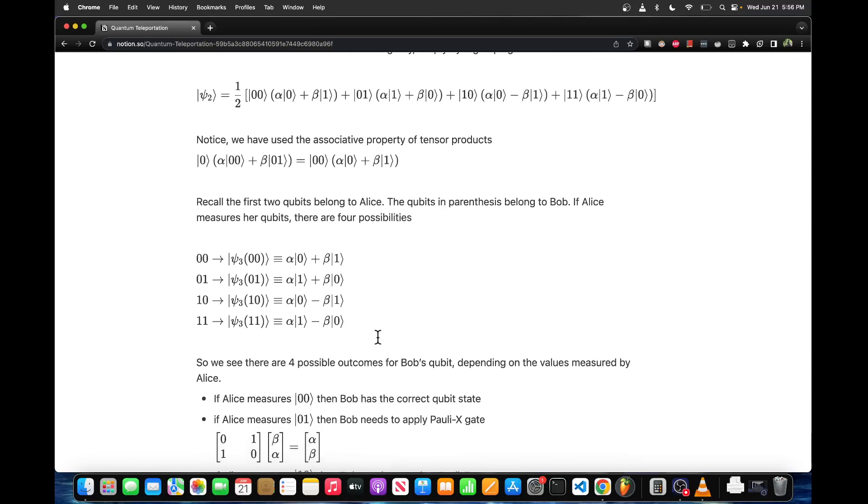The reason that we do this is because when Alice measures qubit 0 and qubit 1, she's going to get one of four different measurements. If she measures 0,0 then Bob will get this wave state, which is the correct wave state. But if Alice measures 0,1, Bob's wave state is going to have the coefficients swapped, so he needs to apply a Pauli X operator to swap them back. If Alice measures 1,0 then Bob needs to apply a Pauli Z operator to flip the 1 state vector to a positive sign.